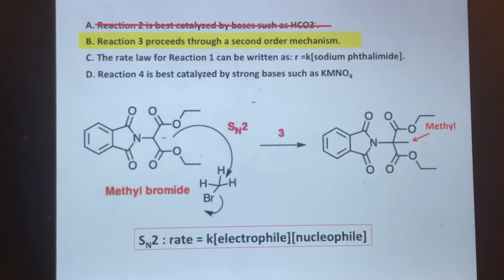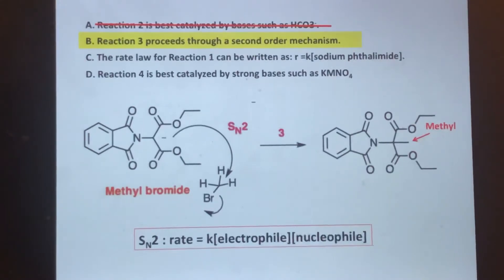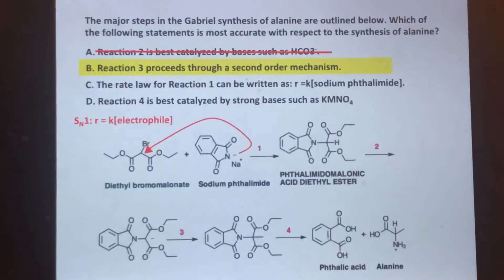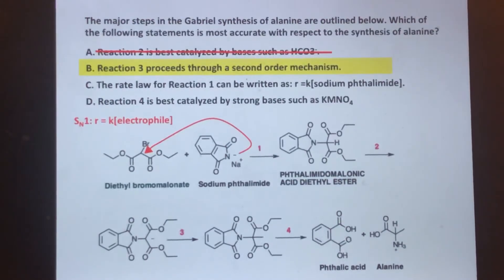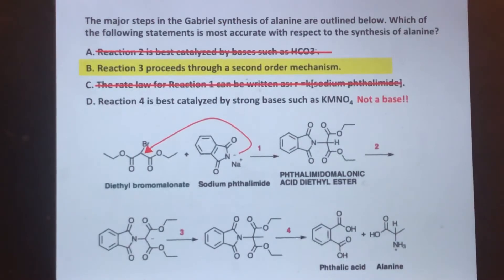We'll make a quick run through C and D to confirm. On the MCAT you can select B and move on, but if you have extra time, verify the remaining choices. Choice C states the rate law for reaction one can be written as R = k[sodium phthalimide], implying SN1. However, sodium phthalimide is a negatively charged nucleophile, not an electrophile, and the reaction is SN2 — so we eliminate C.